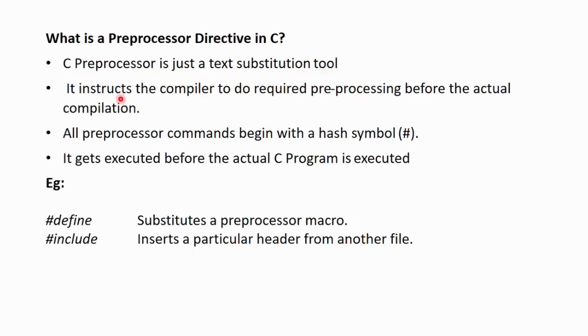C preprocessor is just a text substitution tool. It instructs the compiler to do the required preprocessing before the actual compilation can be done. All the preprocessor commands begin with a hash symbol. This is the hash symbol, the pound sign. It gets executed before the actual C program is being executed.